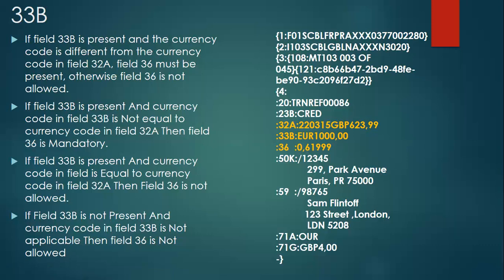If field 36 is not present in a cross-currency scenario, a NACK error will be sent by SWIFT or the payment schema, because field 36 must be there for cross-border payments. On the other hand, if field 33B is present and its currency equals the currency in field 32A — for example, euro in both fields — then field 36 is not required. There's no need to send an exchange rate for euro to euro; field 36 only applies to cross-currency payments.